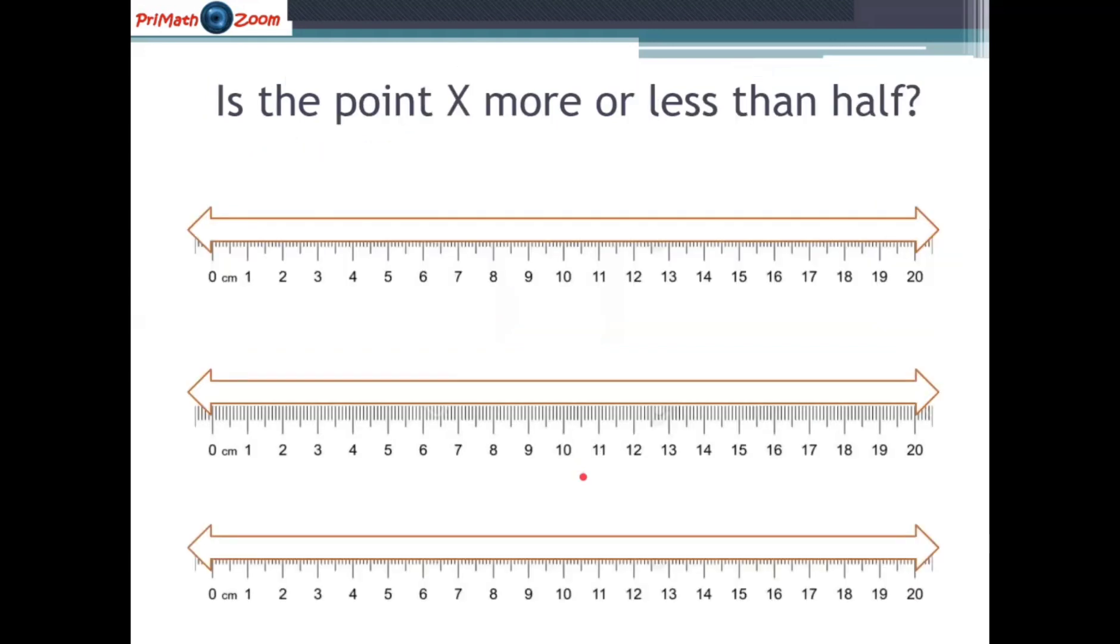Now let's think about this activity. We're going to think about the X. So is the X point more or less than a half? So let's think about the first X point. First we have to do is think about where. Yes. Think about the half mark.